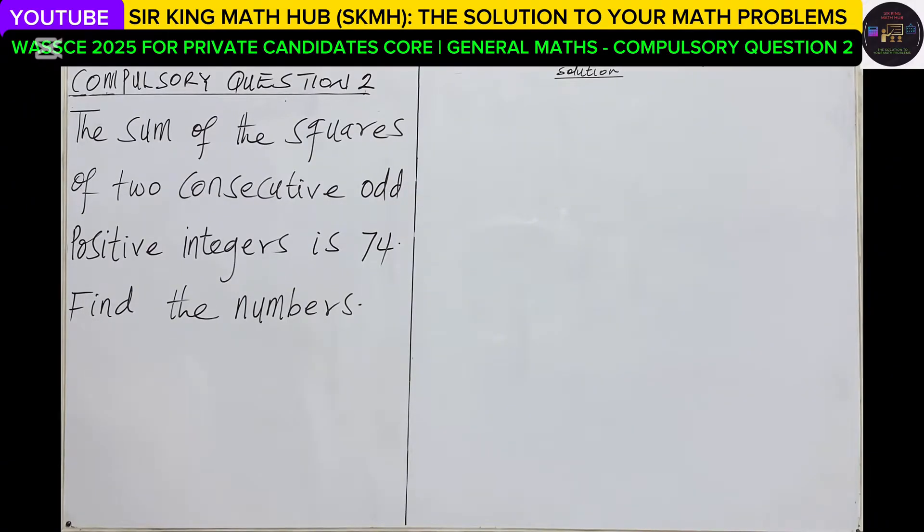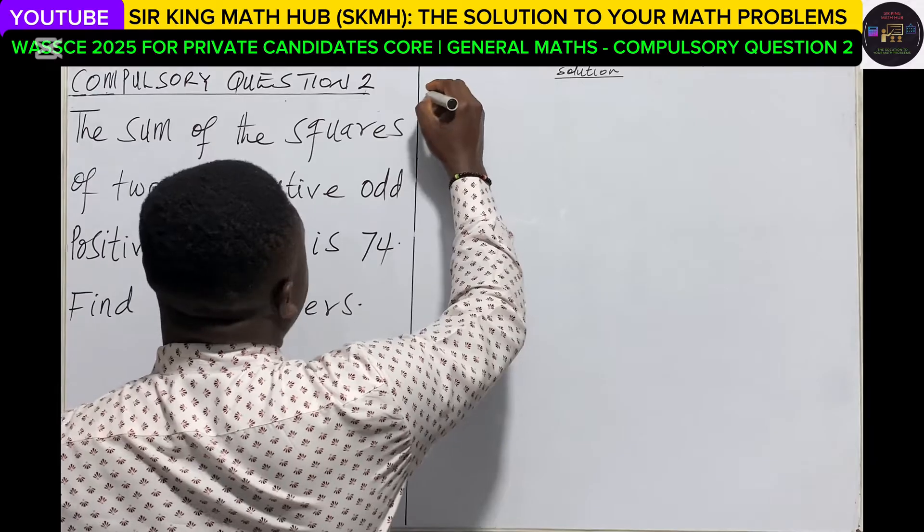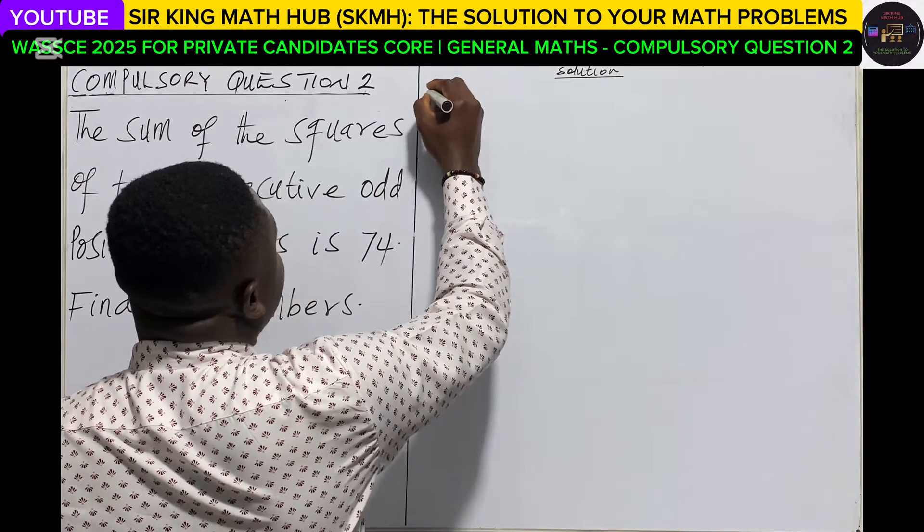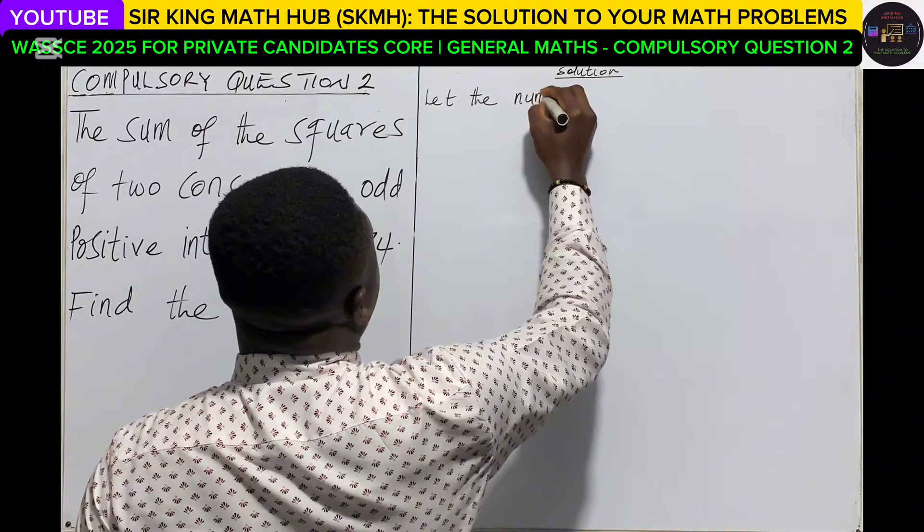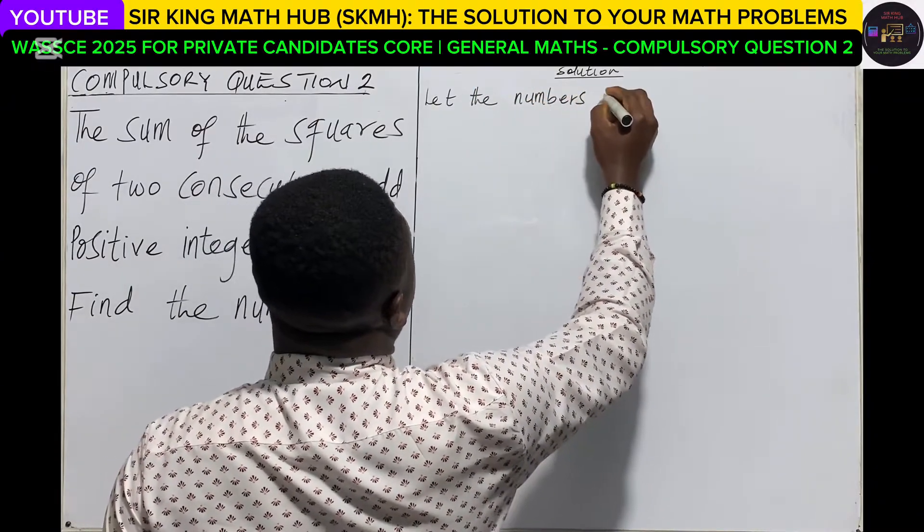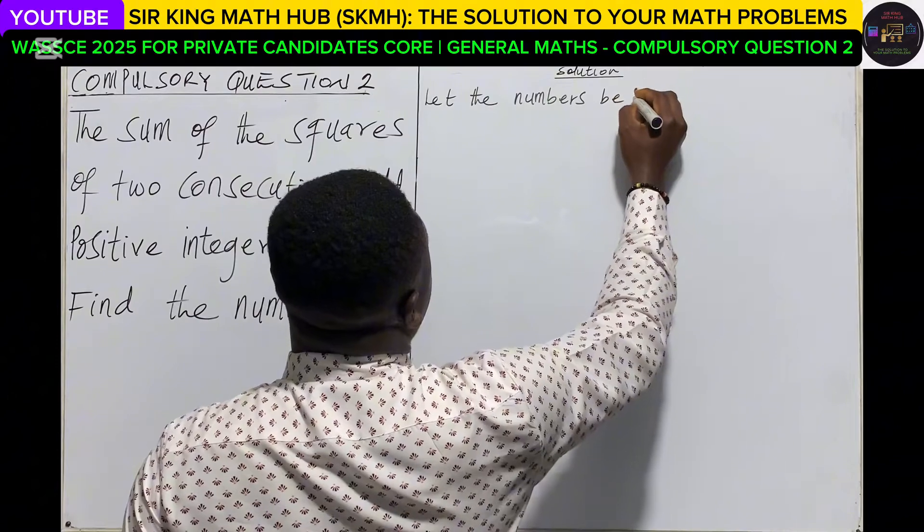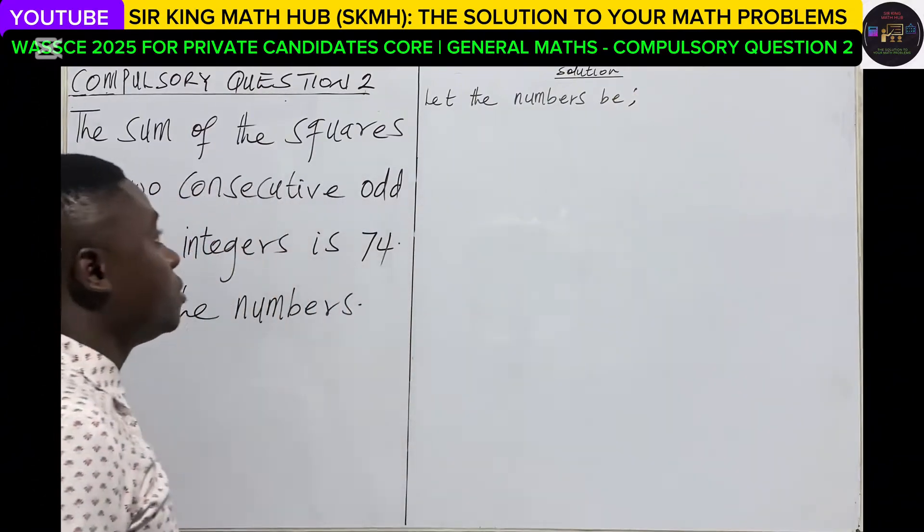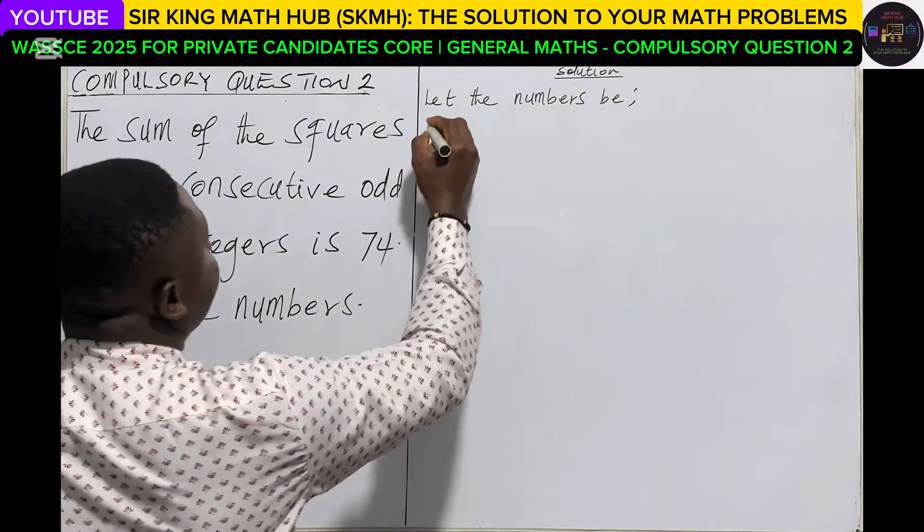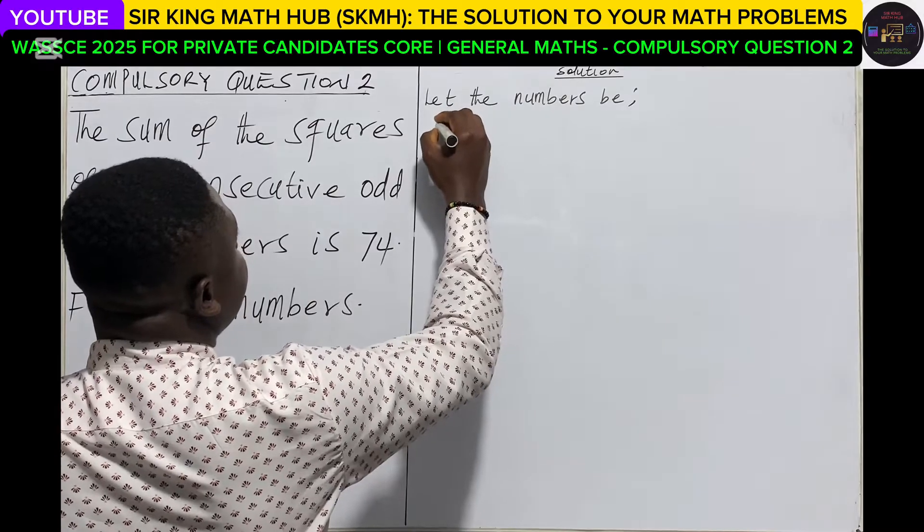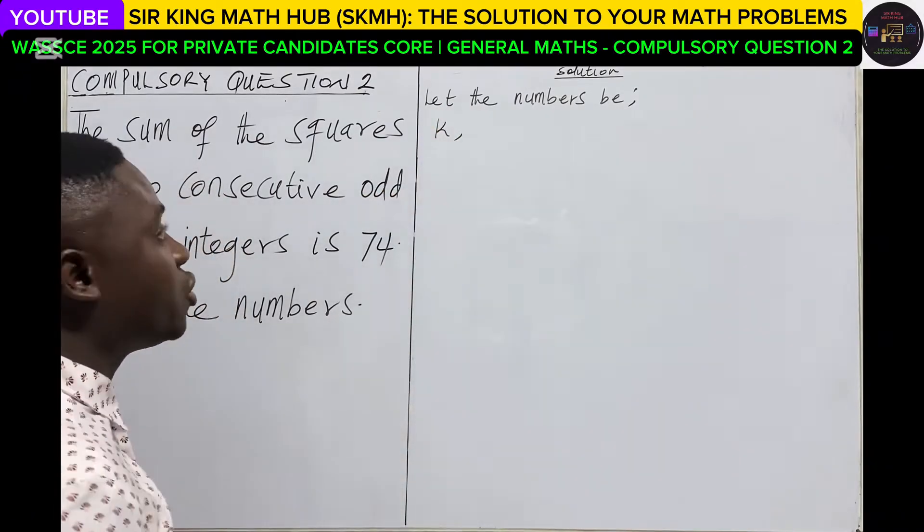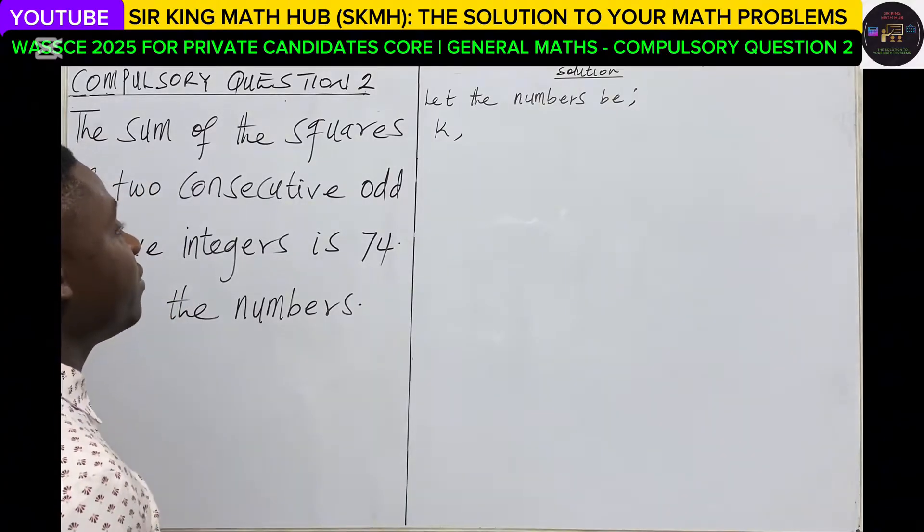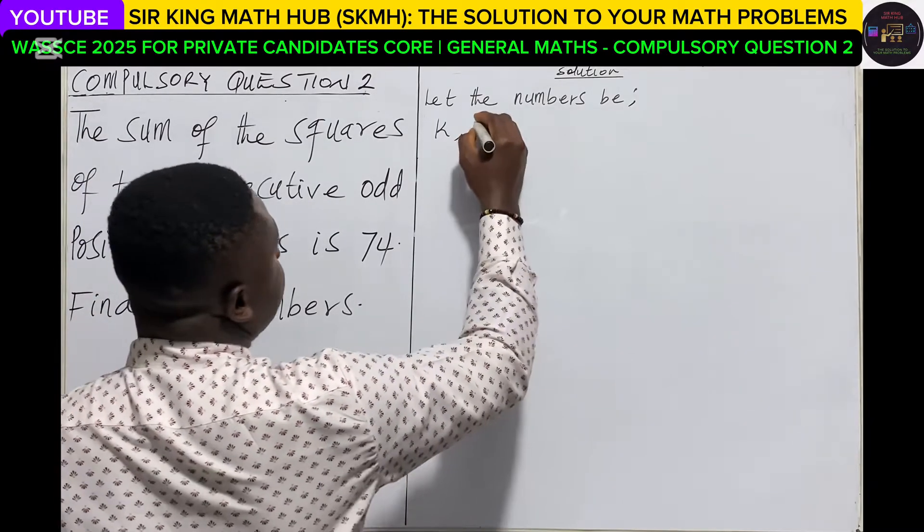Find the numbers. So first of all, let's represent the numbers. Let the first positive odd number be k, so the second consecutive positive odd number would be k plus 2.